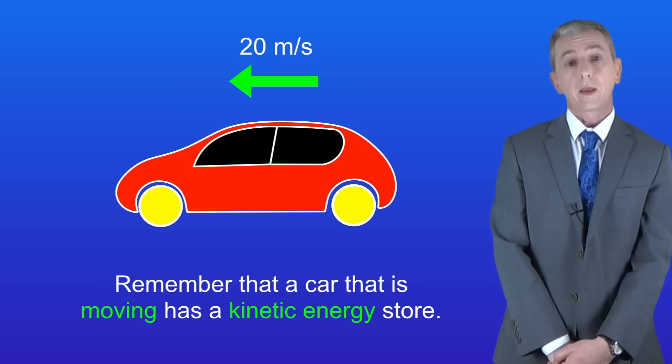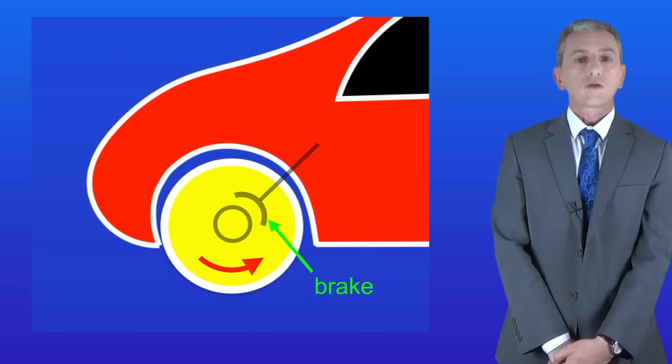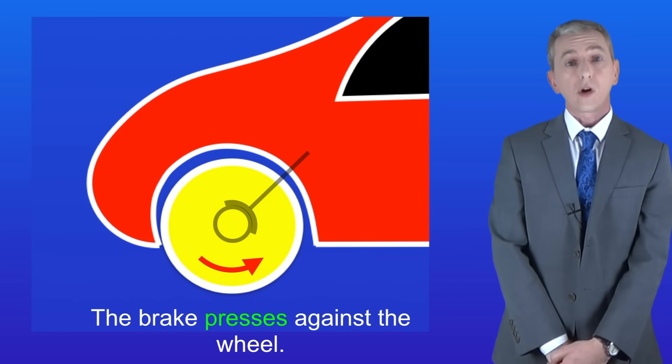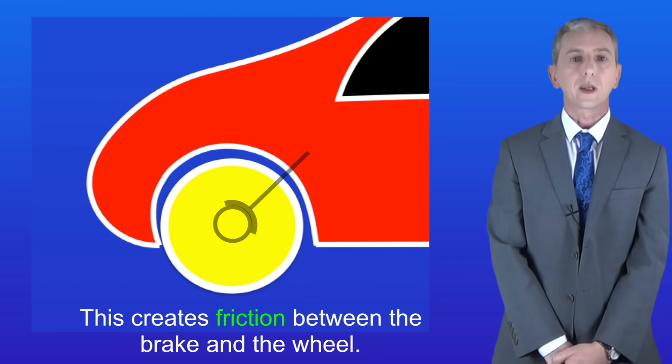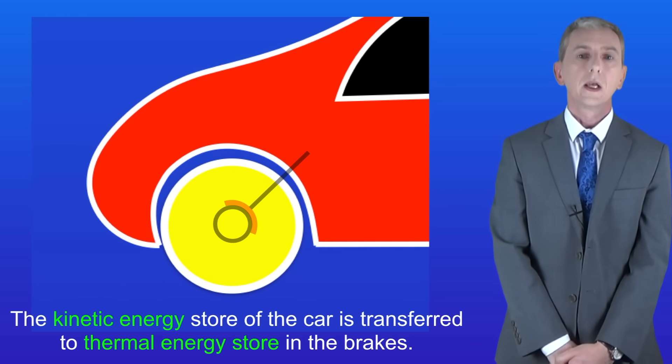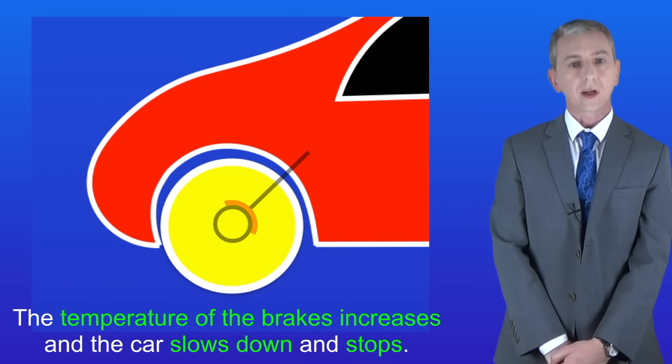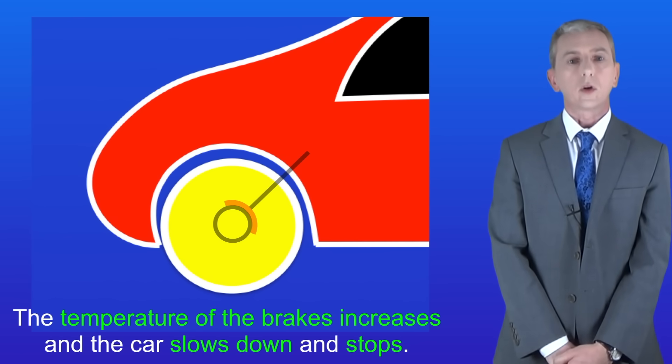Now remember that a car that's moving has a kinetic energy store just like any moving object. So when the driver presses on the brakes the brake presses against the wheel of the car. This creates friction between the brake and the wheel. At this point the kinetic energy store of the car is transferred to the thermal energy store in the brakes. That means that the temperature of the brakes increases and the car slows down and stops. So we've transferred energy from the kinetic energy store of the car to the thermal energy store of the brakes. That means that we've done work.